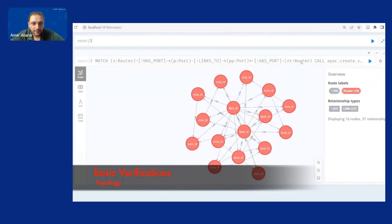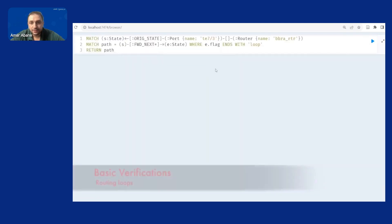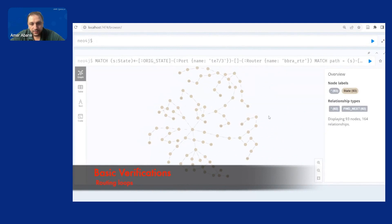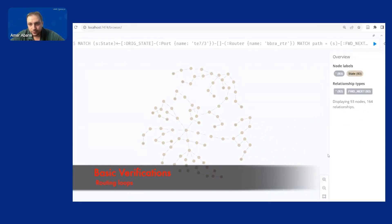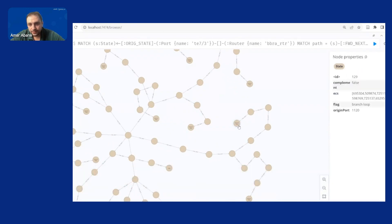And then we can have some basic verification operations this is just the topology of the network it's a leaf spine from Stanford dataset by the way and we can get routing loops that were computed during reachability trees computation and we get also we see in the ECs the traffic that leads to the routing loop.